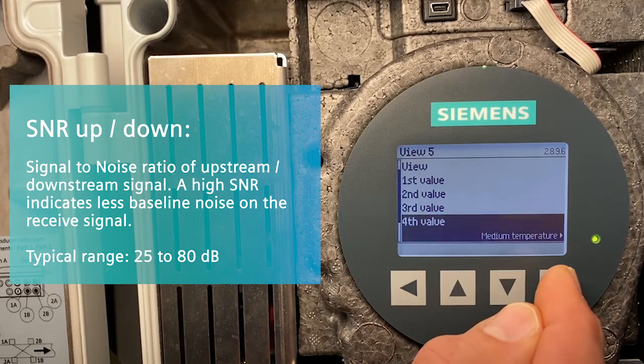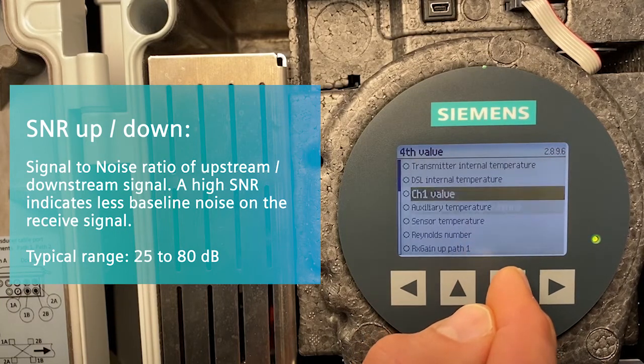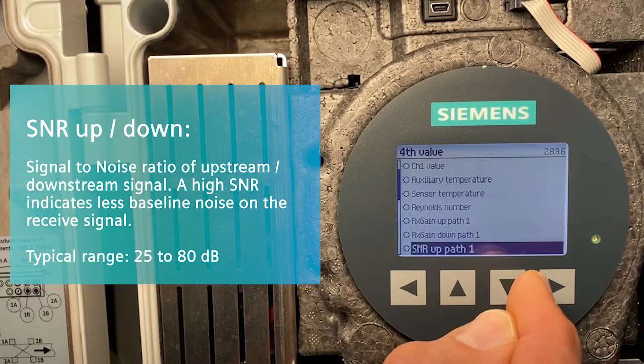Fourth value. This is the SNR down path 1.